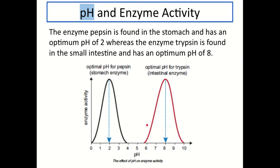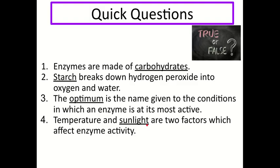Not all enzymes have the same optimum pH or the same optimum temperatures. Here's a final set of true or false questions — for false answers, give the word to replace the underlined word to make the statement true. Number one: enzymes are made of carbohydrates — false, enzymes are made of proteins. Number two: starch breaks down hydrogen peroxide into oxygen and water — false; catalase is the enzyme that does this, not starch. Number three: the optimum is the name given to the conditions in which an enzyme is at its most active — true. Number four: temperature and sunlight are two factors which affect enzyme activity — false; it should be temperature and pH.